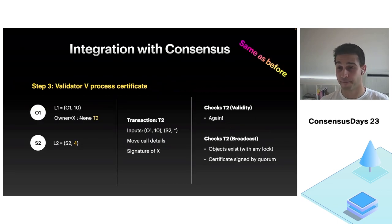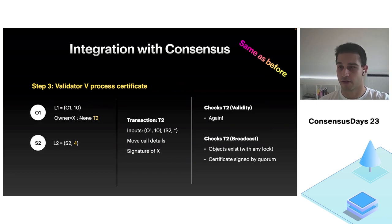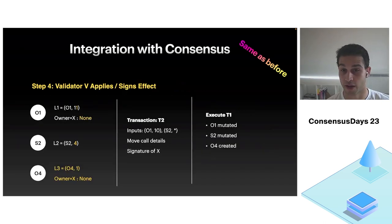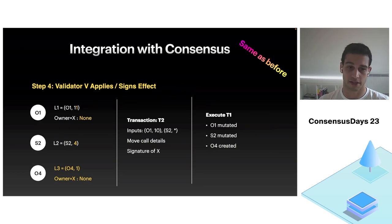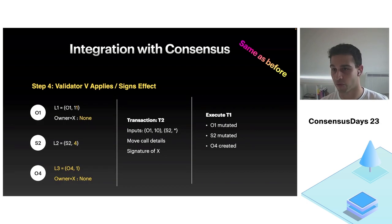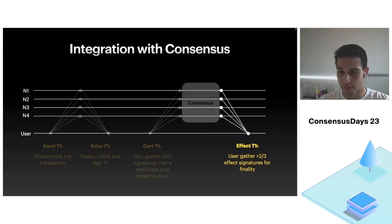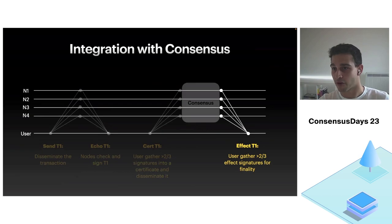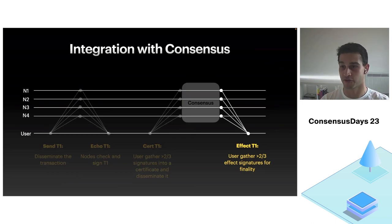After that, same as before for the owned objects: check validity conditions, ensure the certificate is valid, set the lock to T2. Now the shared object and the owned objects all have their version numbers, so we can execute. We update the version numbers of owned objects, reset their locks, and create object O4. Every authority sends back the transaction result to the user, and once the client collects a quorum of signatures, it knows the transaction is final.